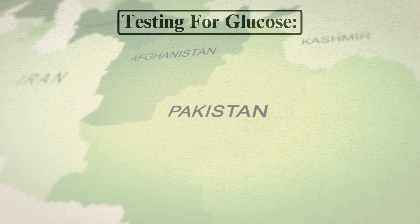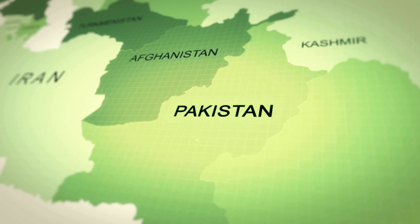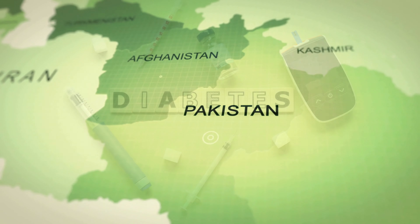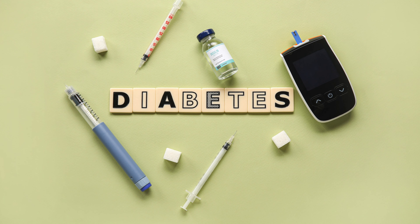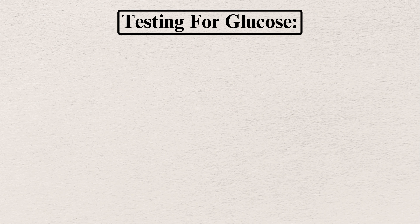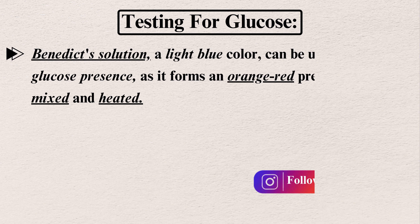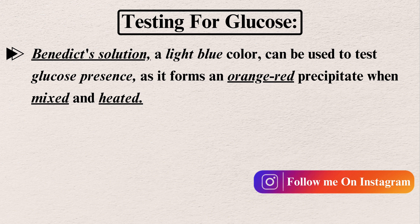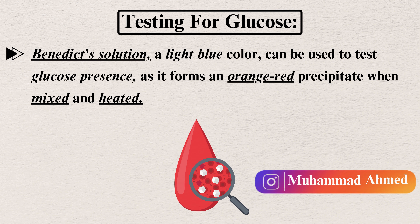Testing for glucose: many people in Pakistan and other countries are facing sugar problems, so it is very important to control glucose in the blood. For testing for glucose, we use Benedict's solution. A light blue solution is used to test for glucose presence, as it forms an orange-red precipitate when mixed and heated.